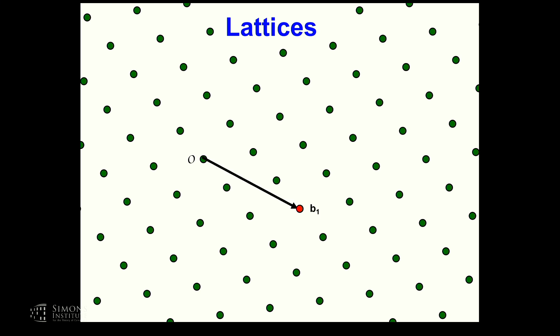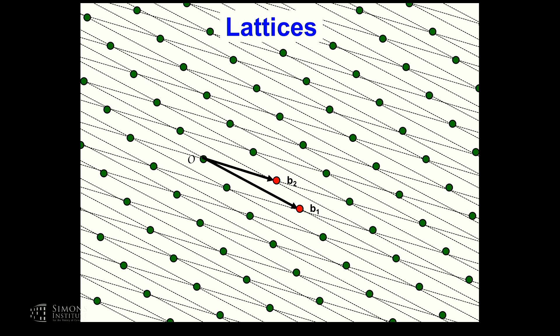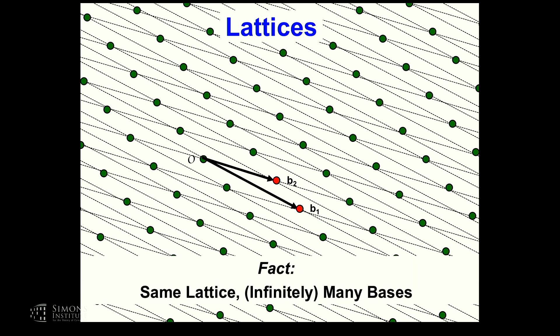It turns out that for this same lattice, you could have different bases. We have a notion of a short basis, a long basis, a better basis, a worse basis. Here's a different basis, and you can express the points as combinations of it. In fact, there are infinitely many bases that are possible.